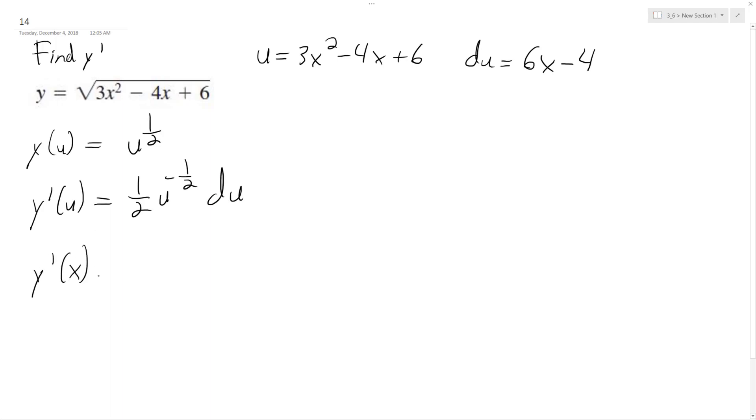So substituting everything back in, we get 1/2, and we can just get rid of this one, and we'll have 6x - 4 on top, and then times the square root of 3x² - 4x + 6.